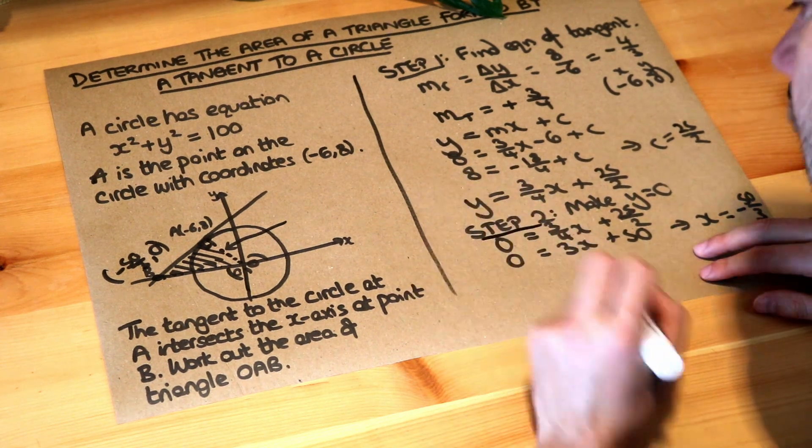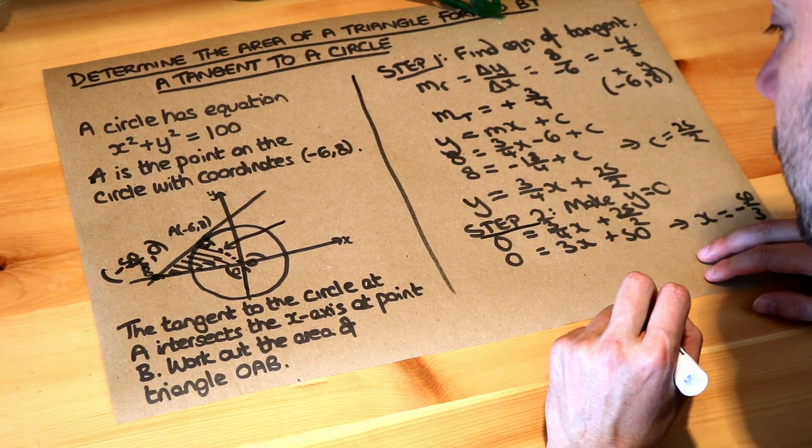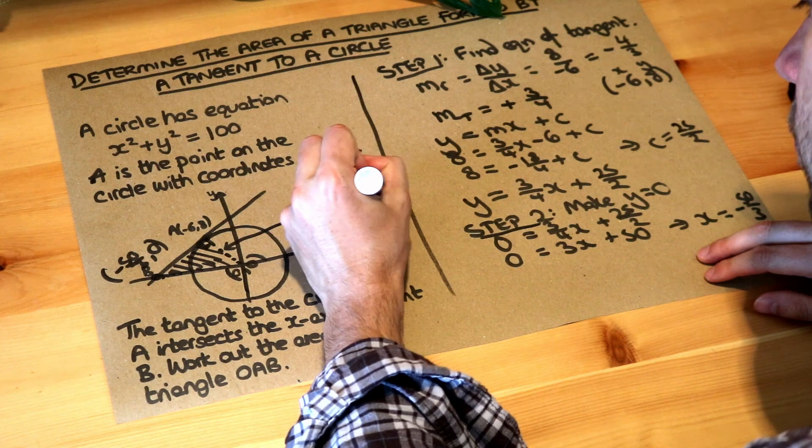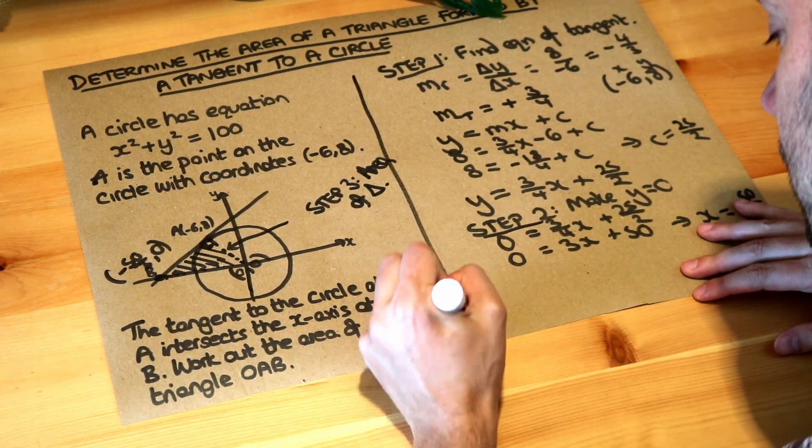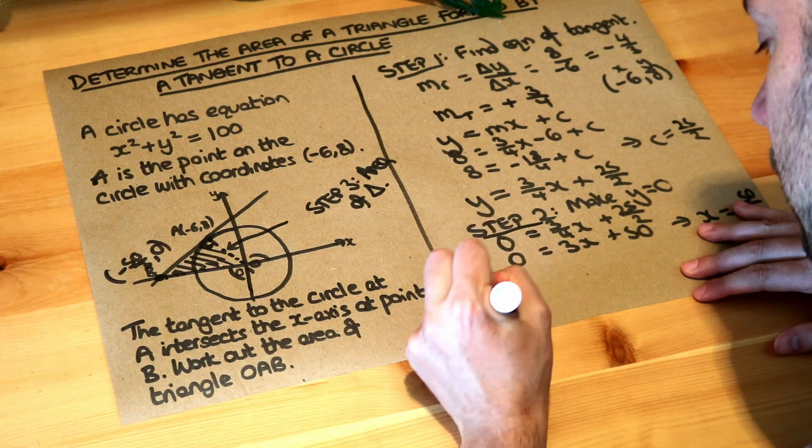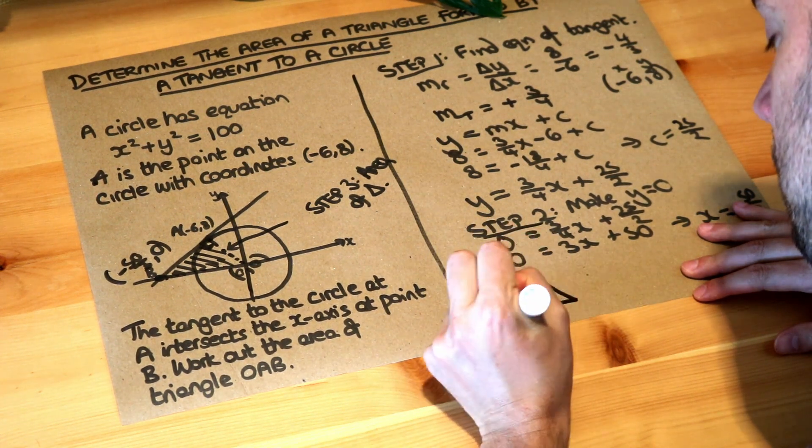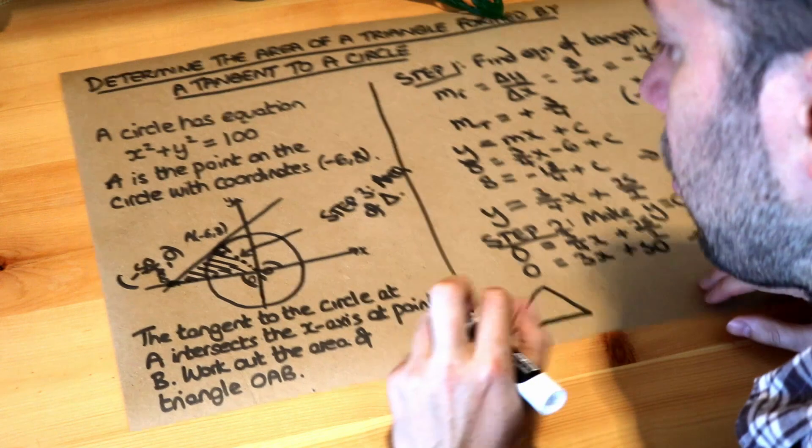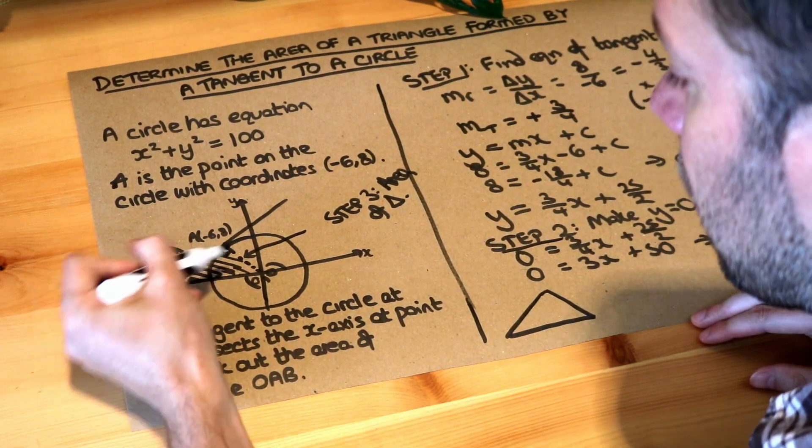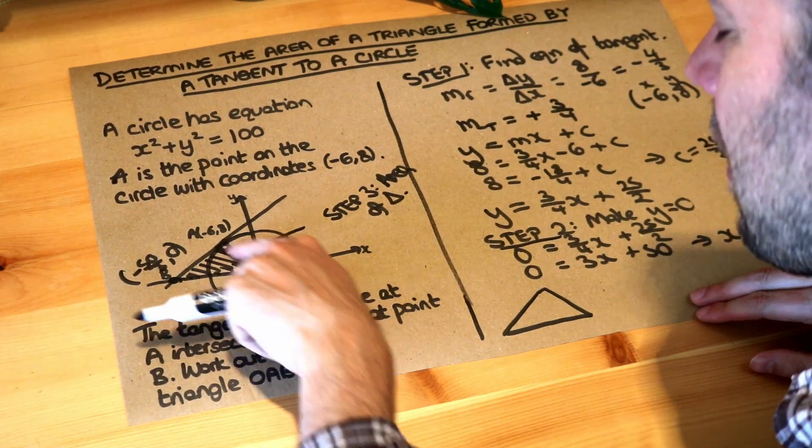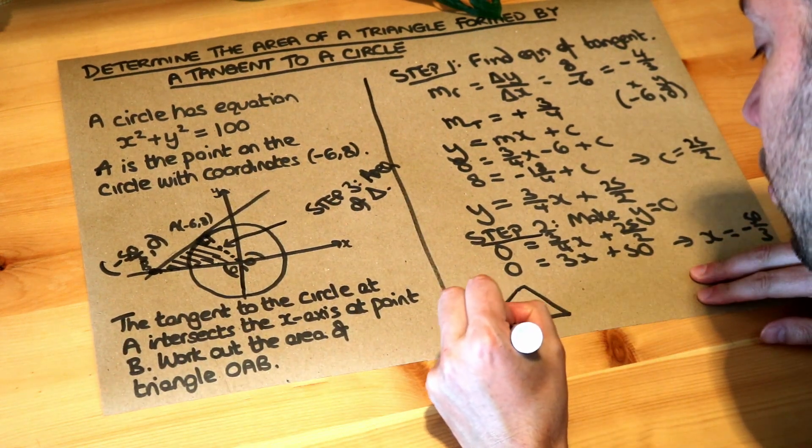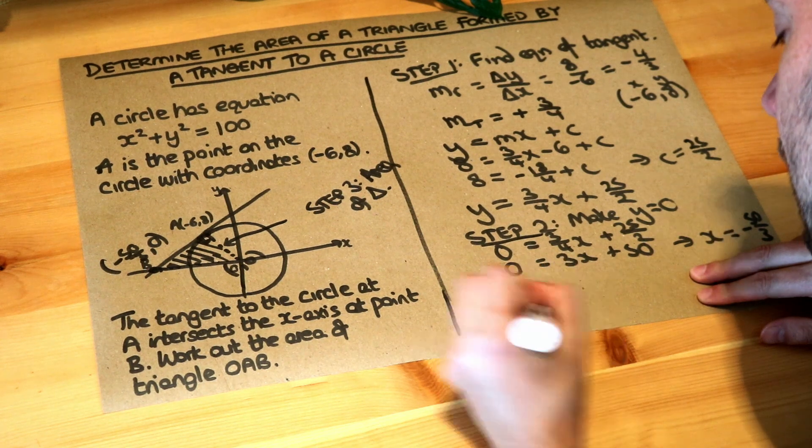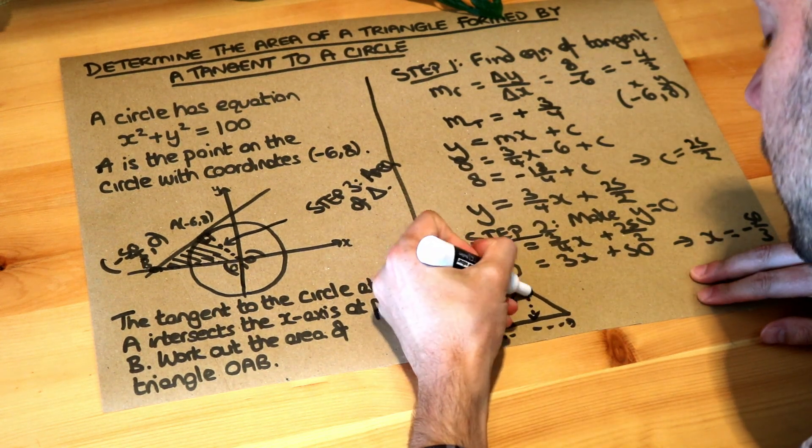Now step three is we get the area of the triangle. Now if we think about it, we've got this triangle here, and we could, if we wanted to, make that the base and that the perpendicular height, but it's quite hard to find this length here and this length here, we'd have to use Pythagoras. It'd be easier to use that as the base and that as the perpendicular height.